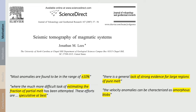When I started my research career in 2007, this seminal review paper on volcano tomography had just come out, and the view in the paper is rather gloomy. Some quotes: most anomalies are found to be in the range of plus or minus 10%; where the much more difficult task of estimating the fraction of partial melt has been attempted, these efforts are speculative at best; there is a general lack of strong evidence for large regions of pure melt; and the velocity anomalies can be characterized as amorphous blobs.